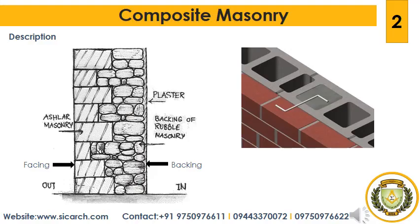We will start with Composite Masonry. But before that, we will first see what masonry is. Masonry is the building of structures from individual units, which are often laid in and bound together by mortar. The term masonry can also refer to the units themselves. Common materials of masonry construction are brick, building stone such as marble, granite and limestone, cast stone, concrete block, glass block, and adobe.